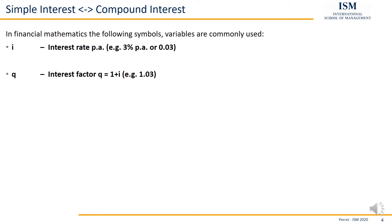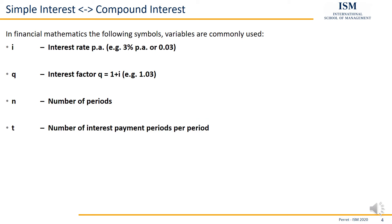If instead we're talking about the so-called interest factor, that's just 1 plus i, and that's what we denote with a q. So it's basically the interest rate plus 1. Then we have the number of periods — the number of periods for which we actually get or save the capital — denoted by n.